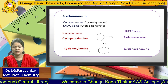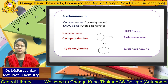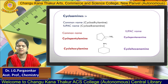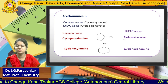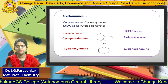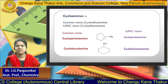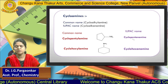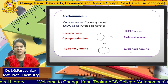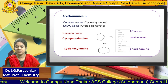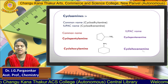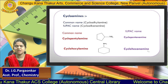For the IUPAC name, we use the word cycloalkanamines. For the cyclic ring, I will use 'cyclo' plus the alkane name. The five-membered ring is pentane, so replacing the final 'e' with 'amine' gives cyclopentanamine. The six-membered ring gives cyclohexanamine.